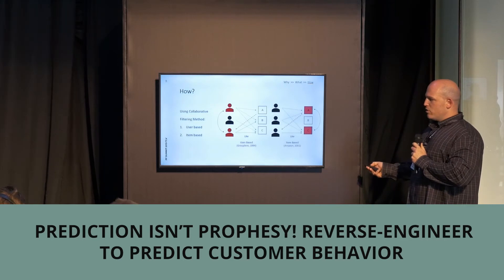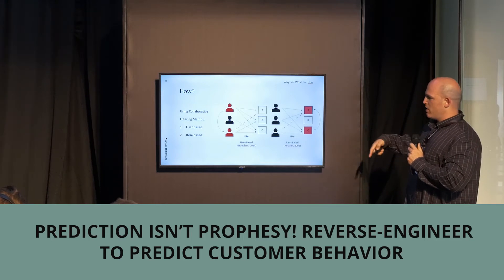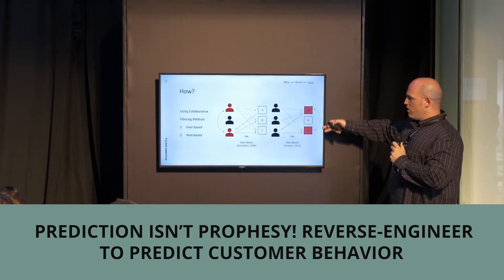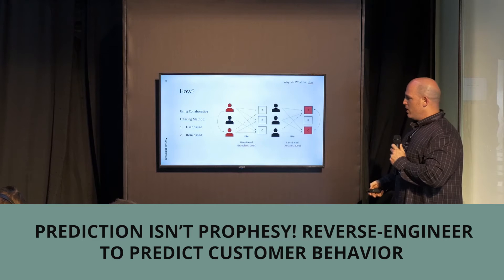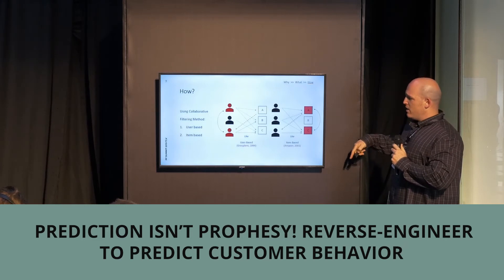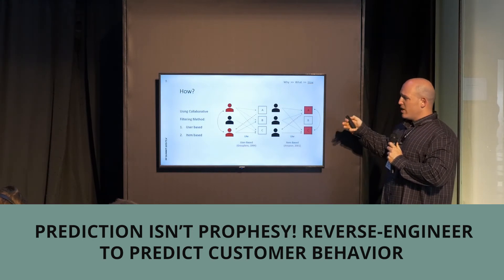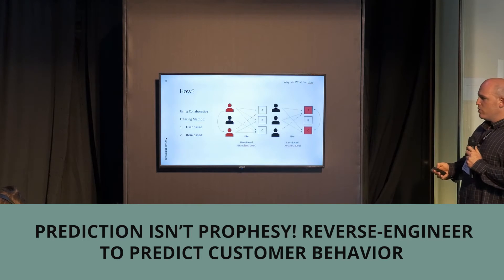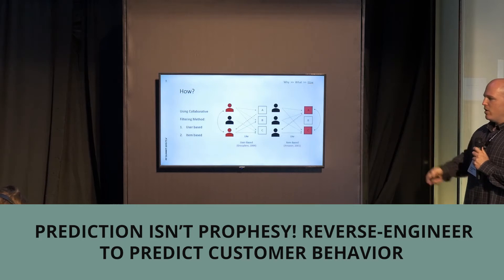In an item-based approach, instead of looking at similar people, we look at similar or highly correlated products. For example, if all people who purchased product C also purchased product A, and a specific customer purchased product C but not product A, we can recommend product A because of that high likelihood. In our DIY we are going to use the item-based approach — it's an easier way to walk through it — but you can use either method when creating your own recommendation model.